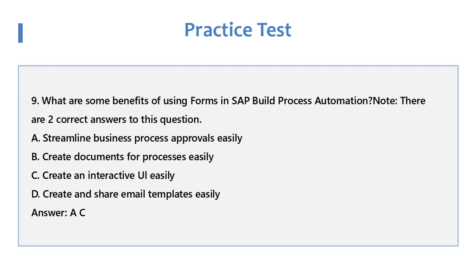Question 9: What are some benefits of using forms in SAP Build Process Automation? Note: there are two correct answers to this question. A. Streamline business process approvals easily. B. Create documents for processes easily. C. Create an interactive OWL easily. D. Create and Share Email Templates easily. Answer: A and C.